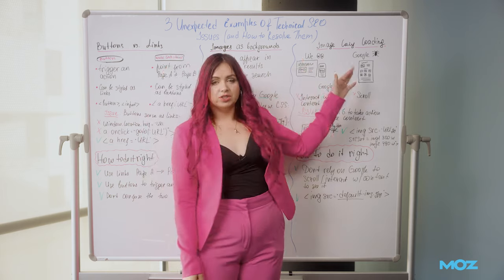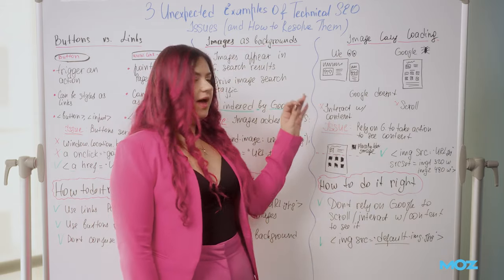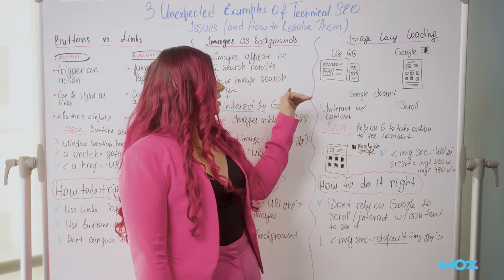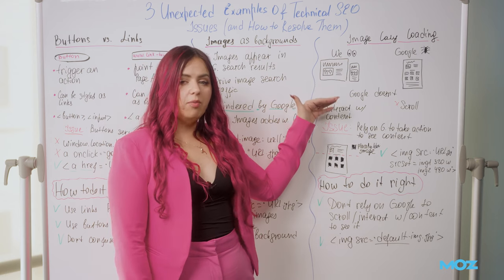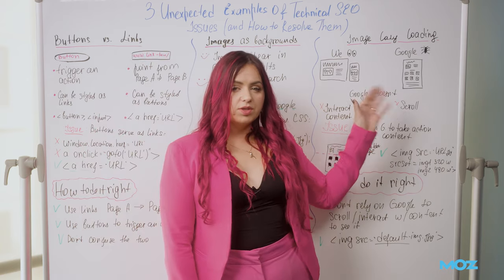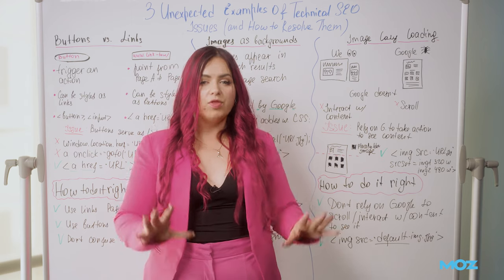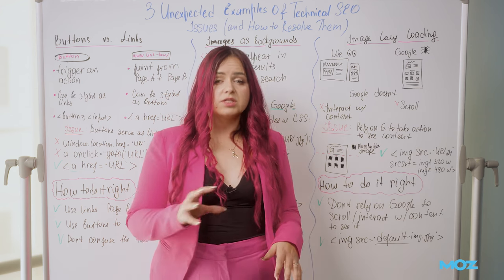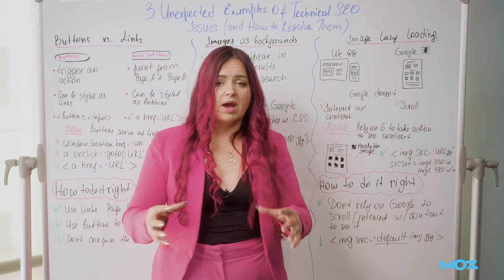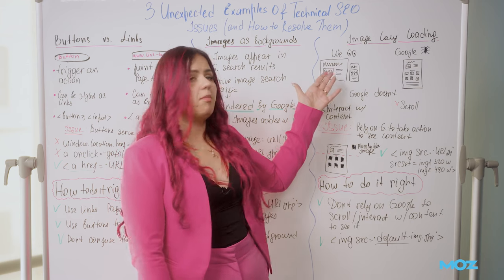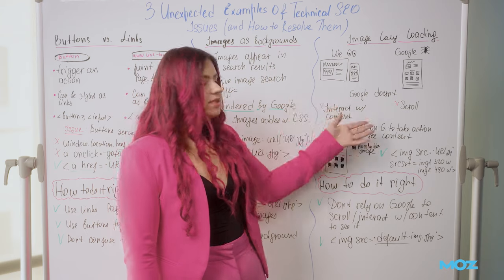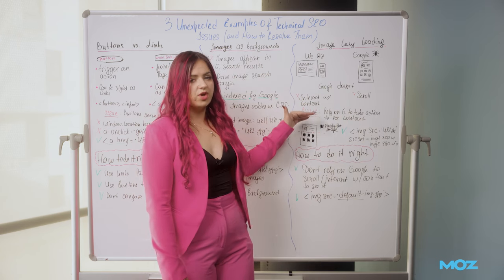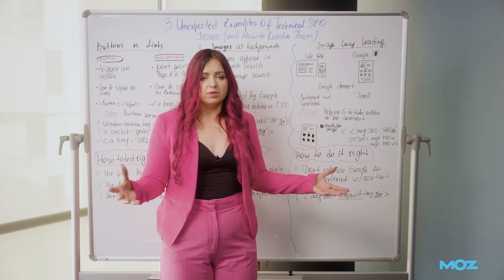The last one is image lazy loading. It's important to understand how differently we see a website versus how Google sees it. As a user, you see content above the fold and scroll to see the rest. But Googlebot needs to see all the content on the page right away — the copy, the images — so it can estimate how optimized the page is. If you only show above-the-fold content, that's not enough. Google doesn't interact with content and Google doesn't scroll.